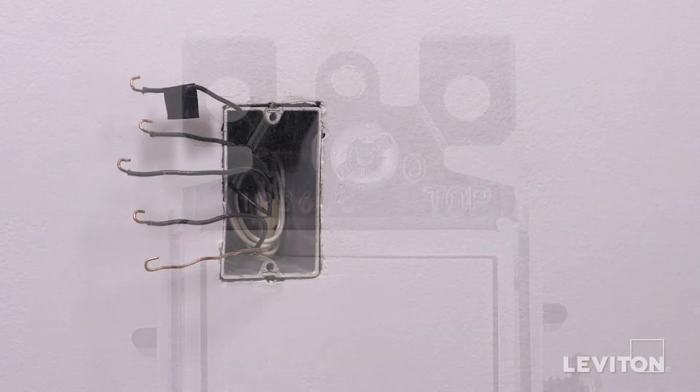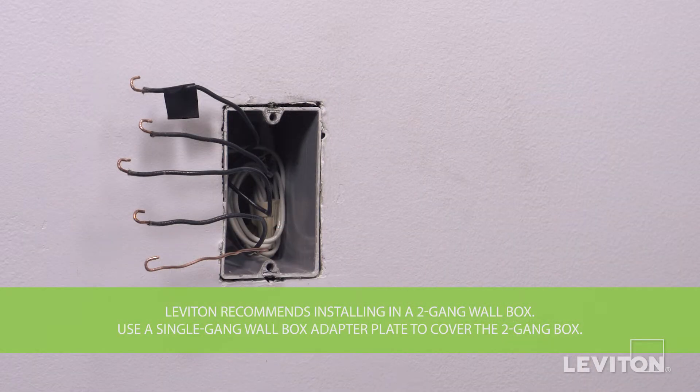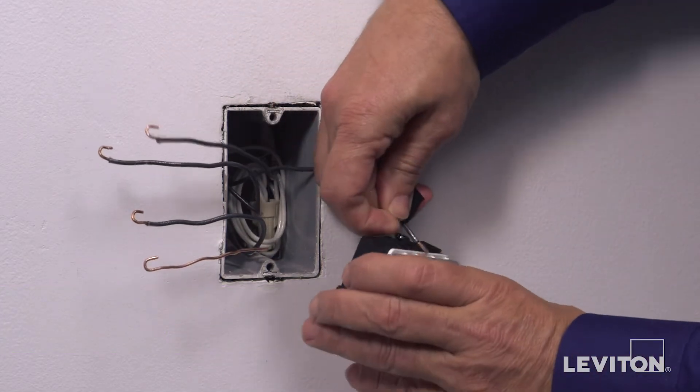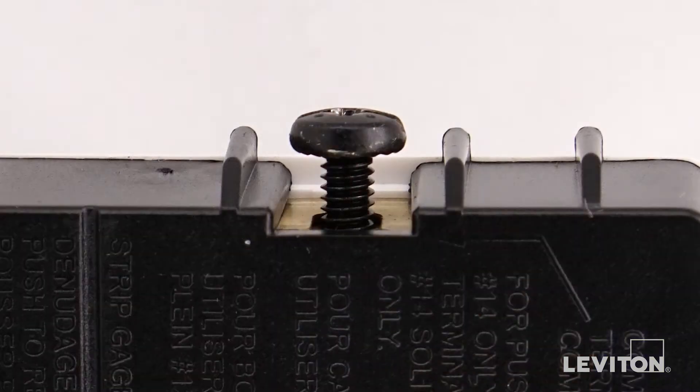To wire, on the side of the device with one terminal screw, loop the hot wire clockwise three-quarters of a turn around the black terminal screw. Tighten firmly.